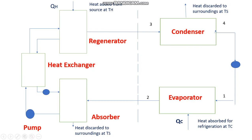In the absorption refrigeration system, the liquid enters the evaporator where heat is absorbed for refrigeration at Tc. From the evaporator it enters the absorber, where heat is discarded to the surroundings at Ts. It then enters the generator where heat is added from the source at Th. Finally, it enters the condenser where heat is discarded to the surroundings at Ts.